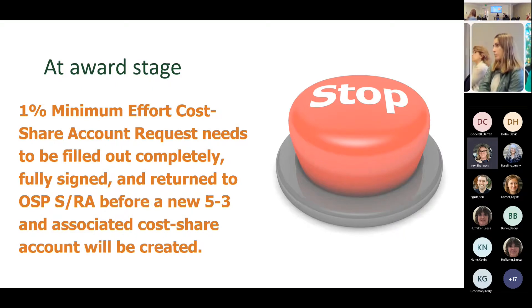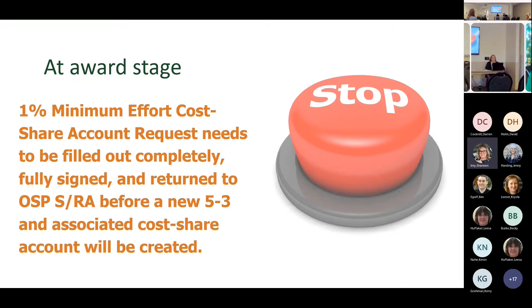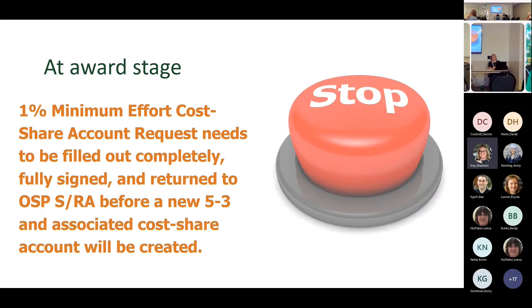When we put non-salary key personnel in the justification, we're basically telling NSF we're committing voluntary cost share, which NSF doesn't want to hear. So if people are going to be working on the project without receiving salary, we put them in the Facilities, Equipment, and Other Resources section — that's where we can talk about what they're doing without voluntarily committing to that cost share, even though that's essentially what we're doing. We're just considering it a resource for the project and not reporting it back to the sponsor.